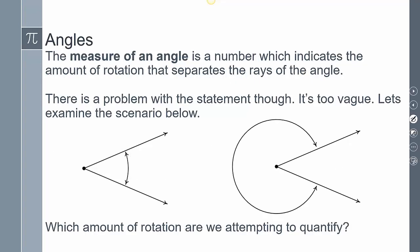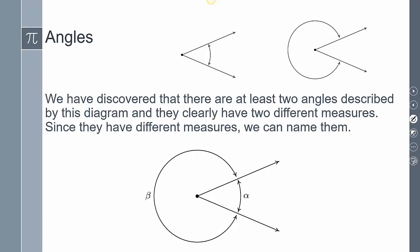The measure of an angle is a number indicating the amount of rotation that separates the rays, but that statement is too vague. Looking at an angle, I don't know if I'm talking about this angle or that one. To alleviate that, we name them. This would be angle alpha and this would be angle beta, so if I say 'what is angle alpha,' you know exactly which one I mean.